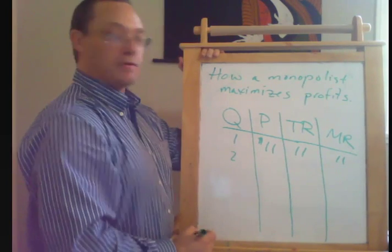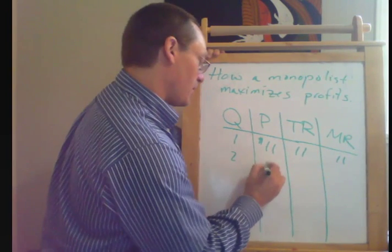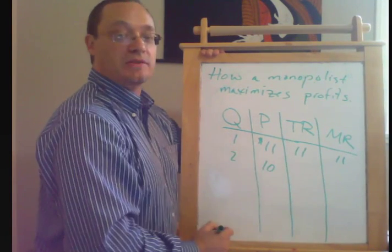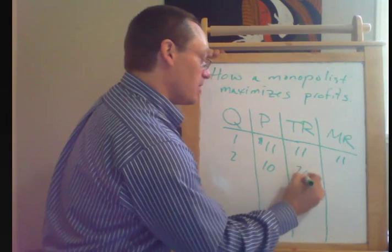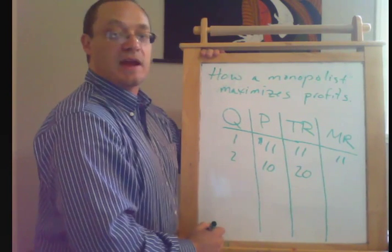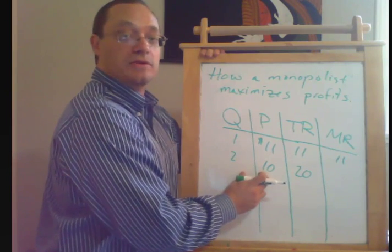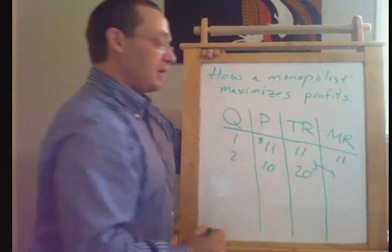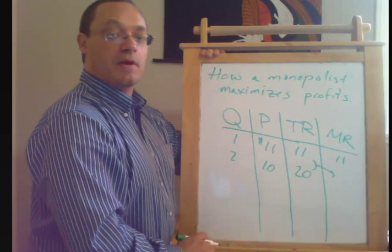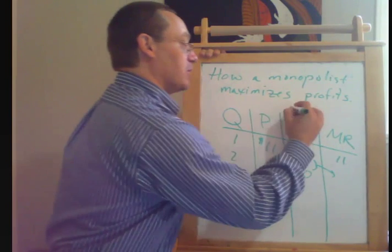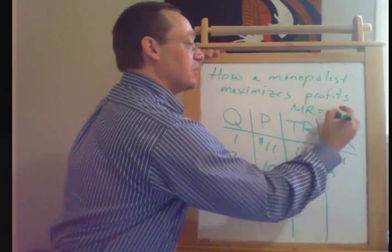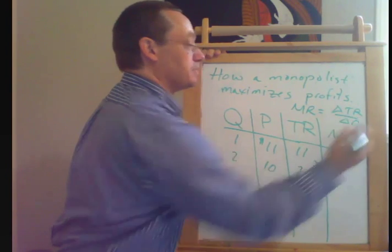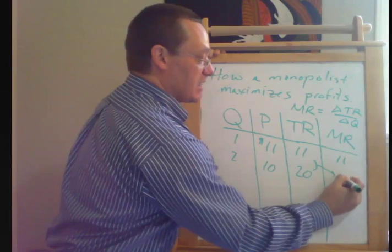And let's suppose that as they go to two units, they have to cut their price to 10 bucks to be able to sell the additional unit. So if they produce two units, they're going to have $20 of total revenue, two times 10. And the marginal revenue here then is the change in revenue over the change in the number of units. So marginal revenue equals change in total revenue over change in quantity, which in this case is nine.